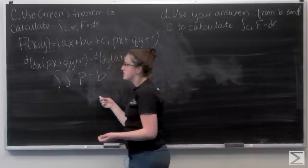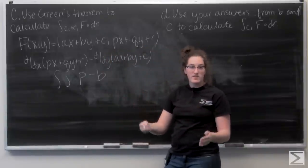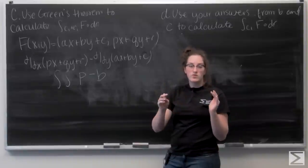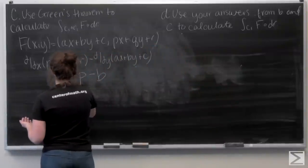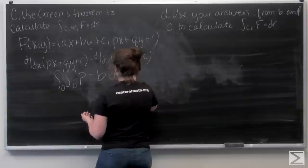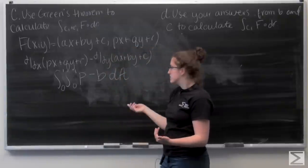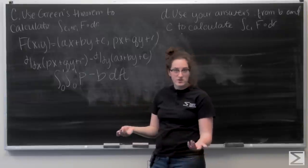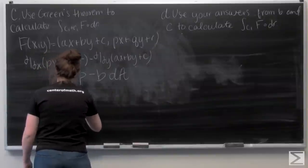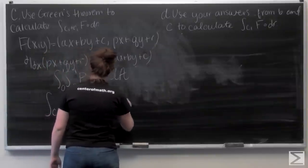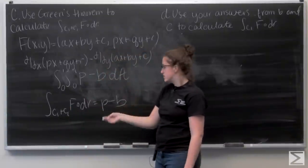Now I want to take the double integral of this over our area. So let's recall that when we added c1 and c2 together, they made a square where x and y both go between 0 and 1. So those are going to be my bounds of integration. But p minus b is just a constant, so I could just multiply this by the area of that square, which is just going to be 1. So the line integral of f around c1 and c2 is just p minus b.